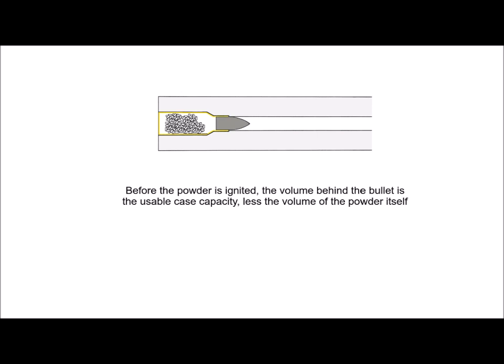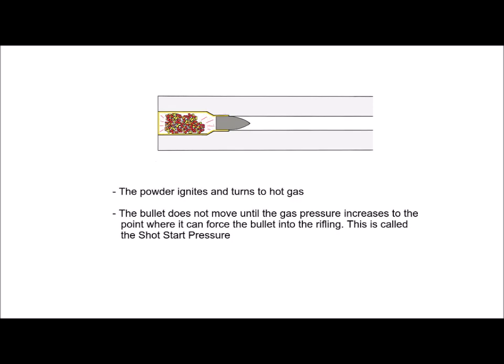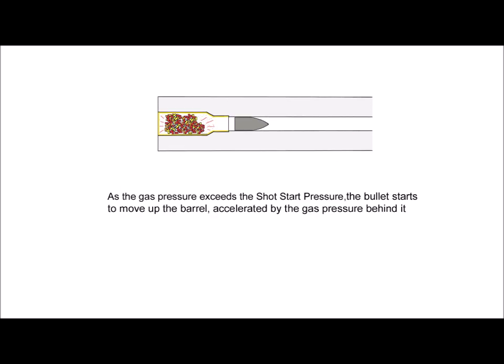So how does the simulator generate this data? Before the powder is ignited, the volume behind the bullet is the usable case capacity, which we talked about earlier, less the volume of the powder itself. When the primer ignites the powder, the surface of the powder starts to burn away on each kernel, creating a hot gas which builds up in pressure behind the bullet. The bullet does not start moving, however, until the pressure is high enough to force the bullet into the rifling. This is called the shot start pressure. As the gas pressure exceeds the shot start pressure, the bullet starts to move up the barrel, accelerated by the gas pressure behind it.